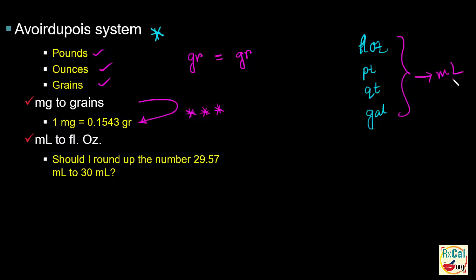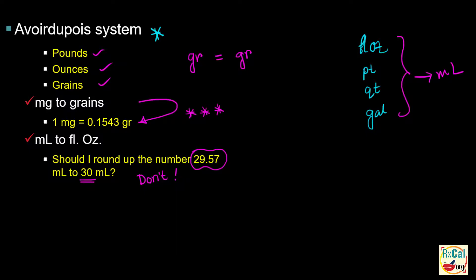The relationship is 1 fluid ounce equals 29.57 mL. Although in many cases people write 1 fluid ounce as 30 mL, please use 29.57 to be more precise in calculations. Otherwise, you may see wide variation when working with large numbers.